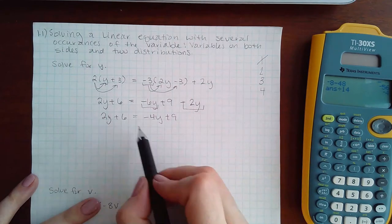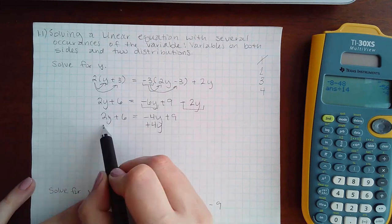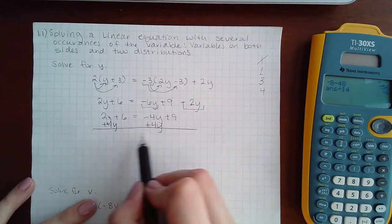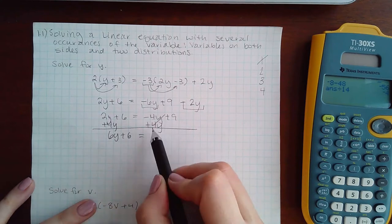Step four is to move the variable terms to the left. So we get 6y + 6 = 9.